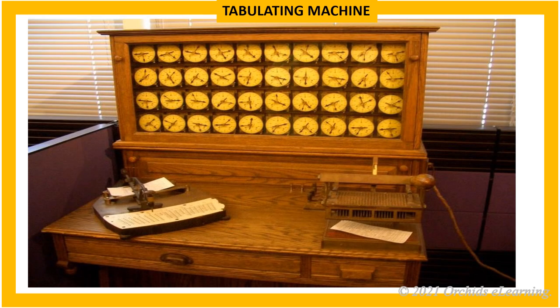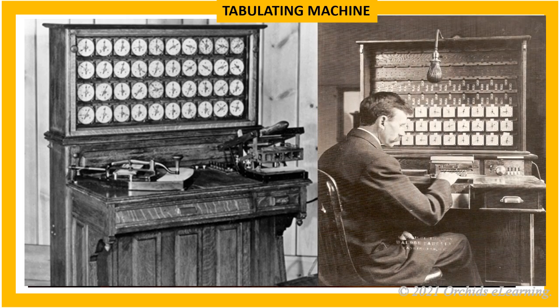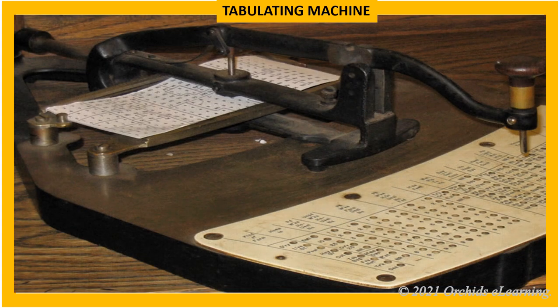Tabulating Machine: In 1890, Herman Hollerith invented the tabulating machine. The increase in population in the U.S. and the need to record population data was a tiring process. He used notes left by Charles Babbage and used the machine to calculate the results of the U.S. census. Punched cards were used to feed the census data, completing the process in about two years.